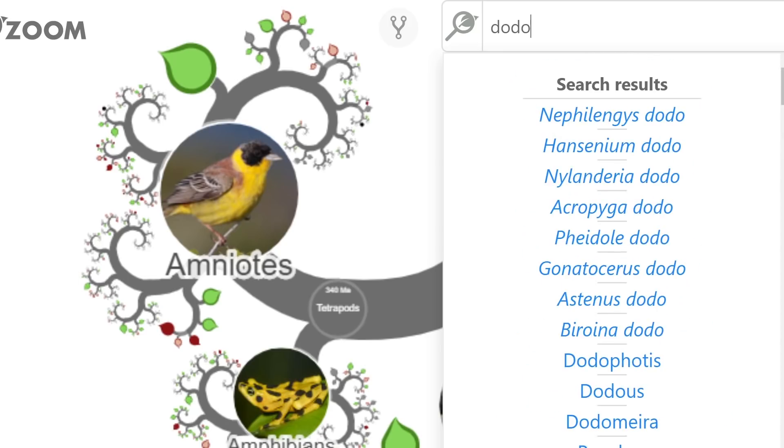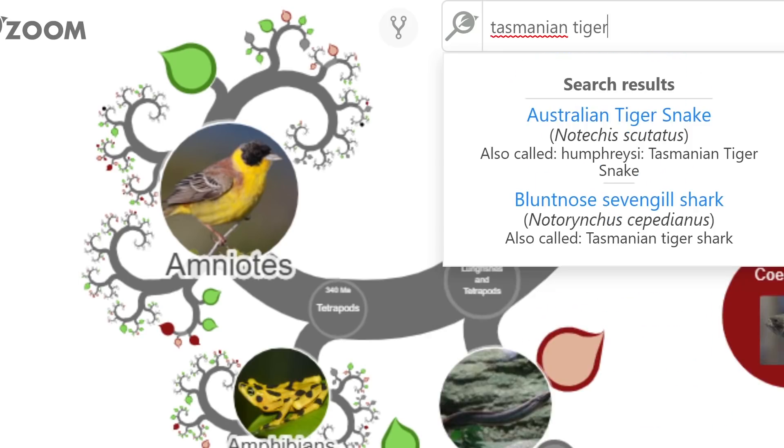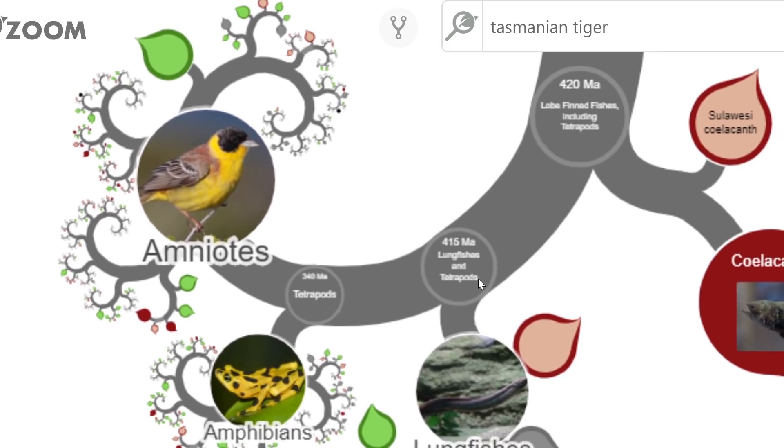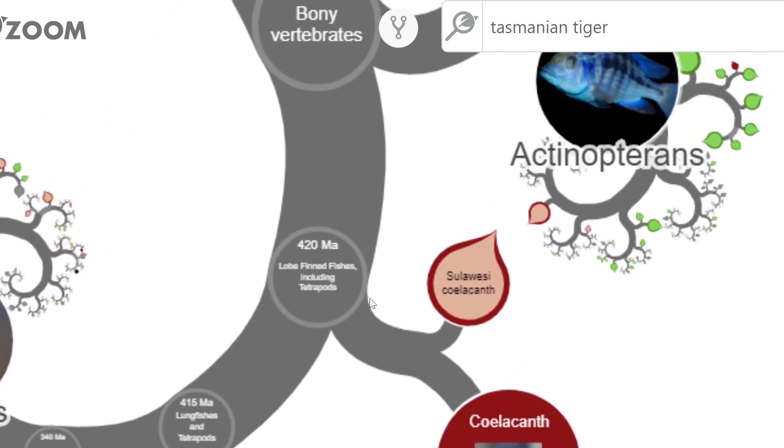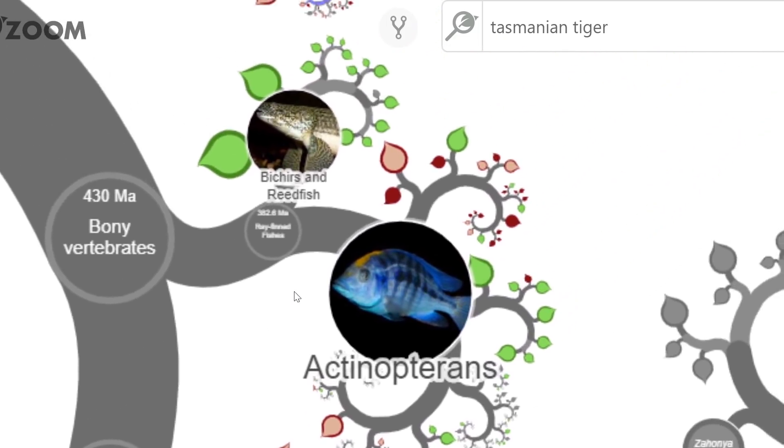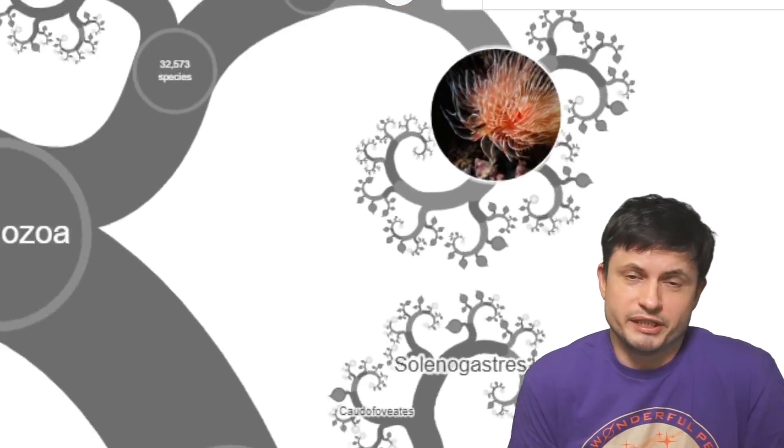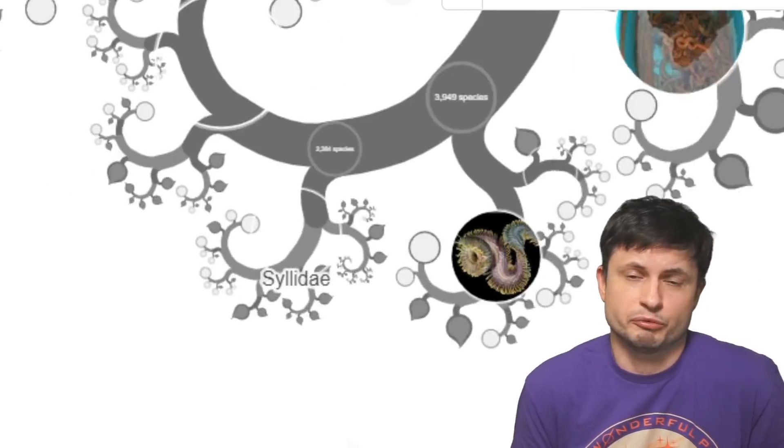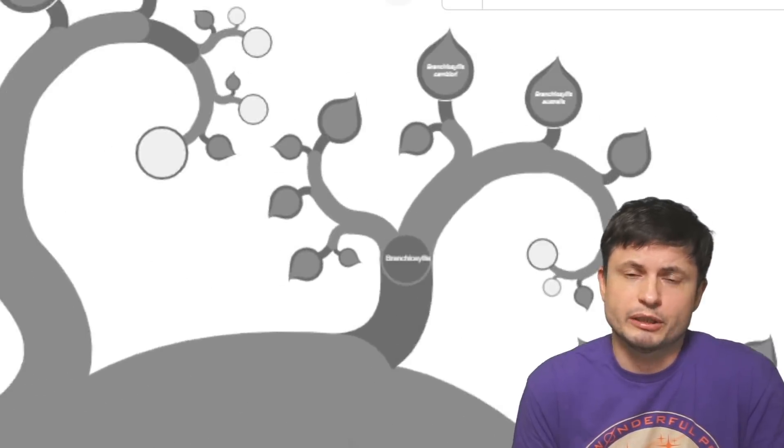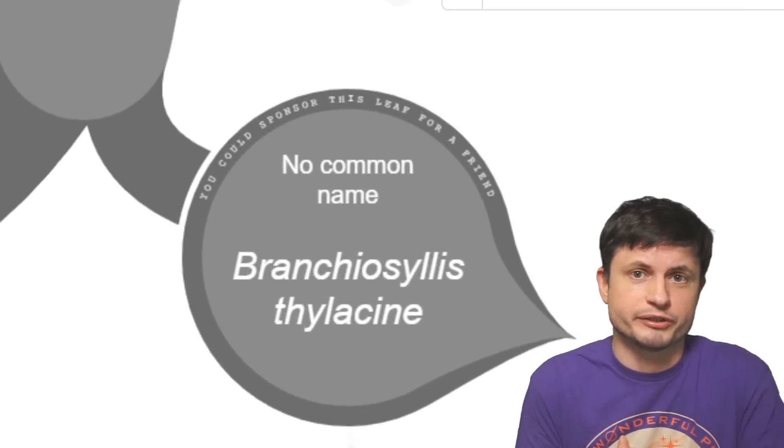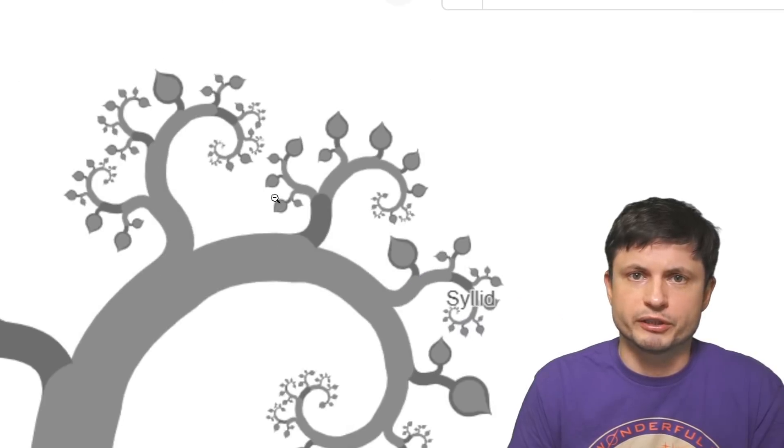So for example, here I was trying to find the dodo birds, and I don't really know where they are. And the same with the Tasmanian tigers. The reason I wanted to show you these is because their leaves are supposed to be black, and that's because they've recently gone extinct. But since this was made by basically a couple of researchers, and it was only released a few weeks ago, I don't really blame them for having some errors here and there. I'm sure they'll figure all of this out and it will work like magic.